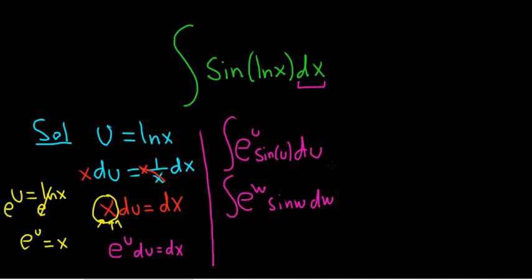So remember, the integration by parts formula says, if you have the integral of u dv, that's equal to u v minus the integral of v du. All right, so I'm going to scroll down here so we have more room.